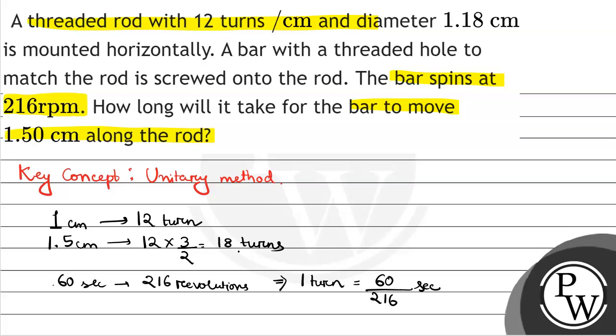We need 18 turns. So for 18 turns, time it will take equals 60 upon 216 into 18.